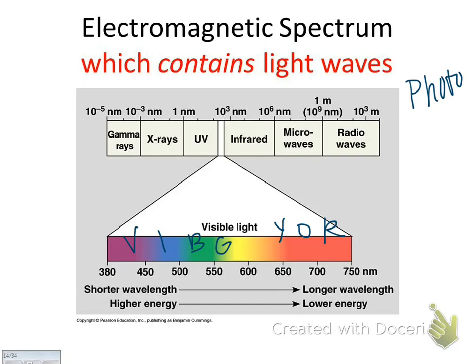This graph shows you the wavelength. Red has a wavelength of 750 nanometers — longer wavelengths mean lower energy — while violet has shorter wavelengths and higher energy.